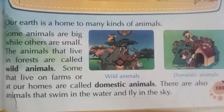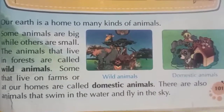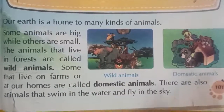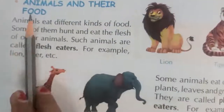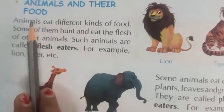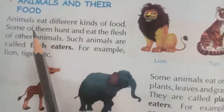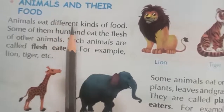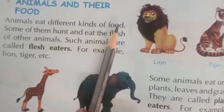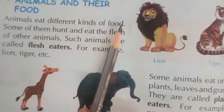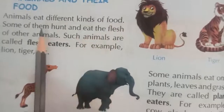So, animals are divided into different groups. Now see the next point: Animals and their food. Here animals are divided into different groups depending on their food criteria.